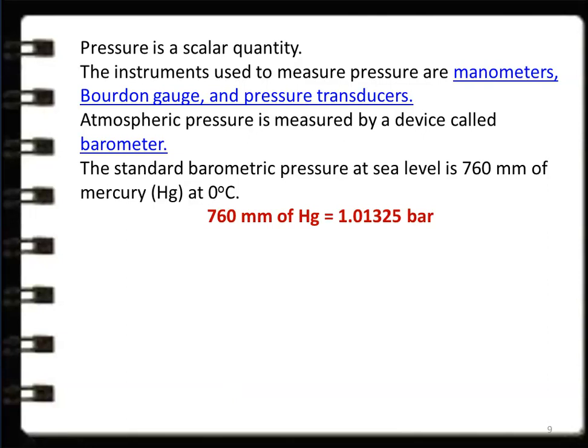Pressure is a scalar quantity. The instruments used to measure pressure are manometer, Bourdon gauge, or pressure transducer. The manometer is the standard instrument to measure pressure; the Bourdon gauge is a mechanical device; the pressure transducer is an electrical equipment working on electrical principles. Atmospheric pressure is measured by a device called a barometer. The standard atmospheric pressure is 760 mm of mercury at 0°C, which equals 1.01325 bar.